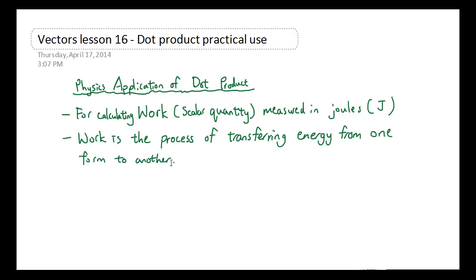So what is work? Work is the process of transferring energy from one form to another. Now there are a lot of different types of energy, for example, potential energy, kinetic energy, and all of that. And we're not going to get into the physics on what each different type of energy is made up of.